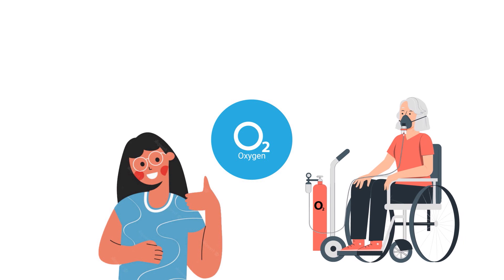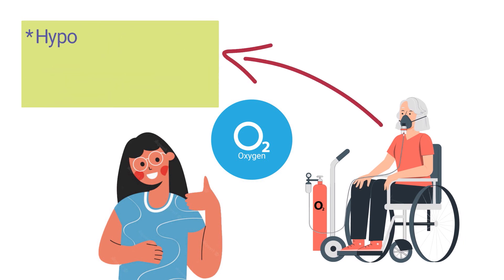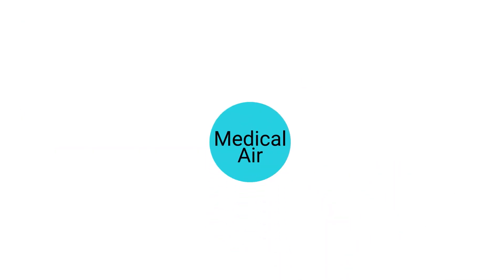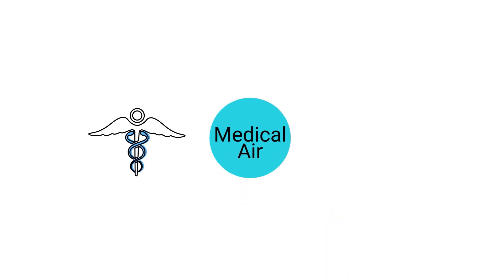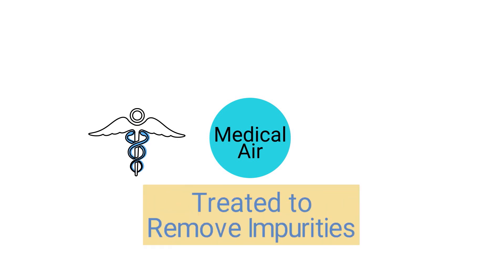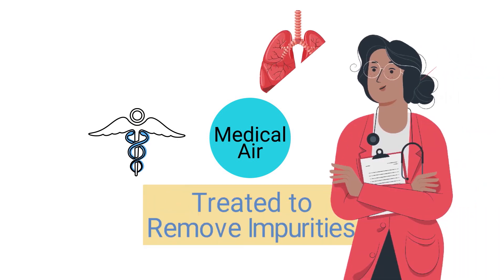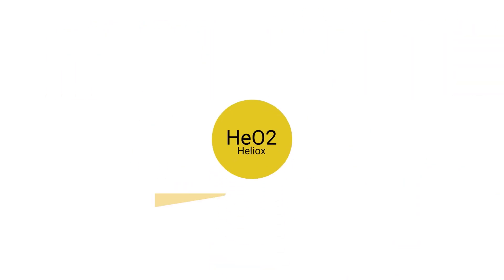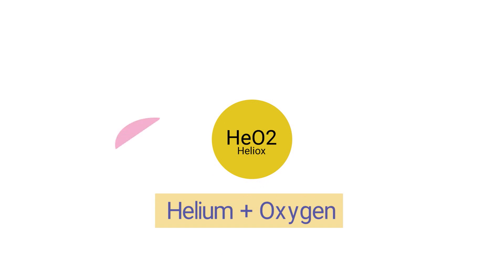Oxygen is the most common medical gas that is delivered. It's used to treat patients with hypoxemia, dyspnea, and acute or chronic respiratory conditions. Medical air is considered to be a medical grade gas because it's been treated to remove impurities. It is primarily used for respiratory support in the hospital setting.